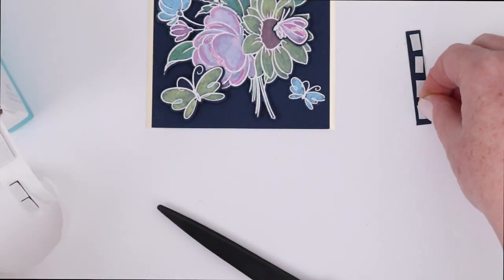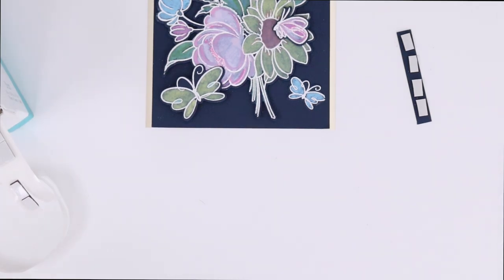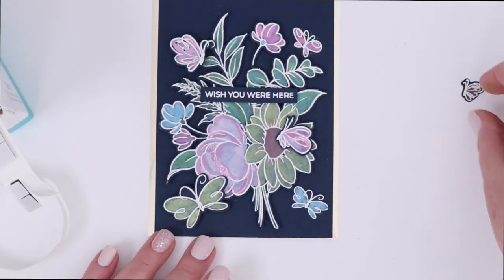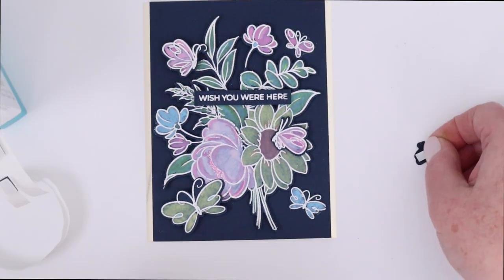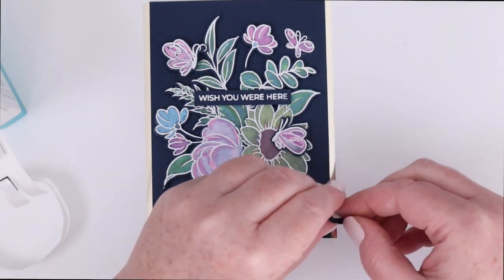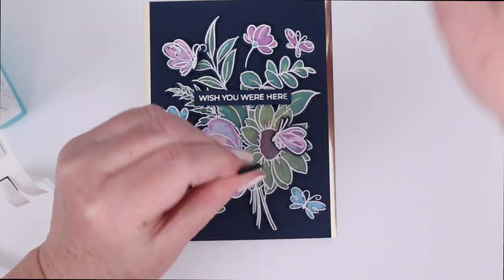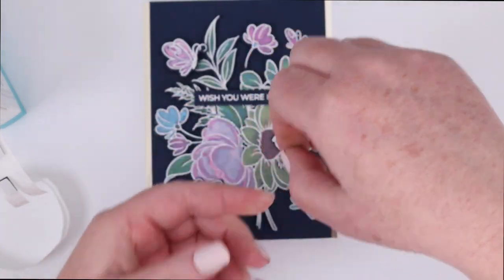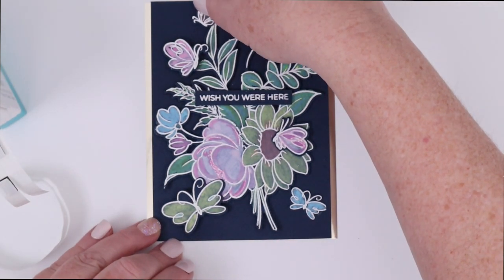I'm going to use the last little piece of black foam square to pop up that teeny tiny little butterfly at the top there and that completes this card. Super easy but so much fun and I love the way these colors pop on that dark background.